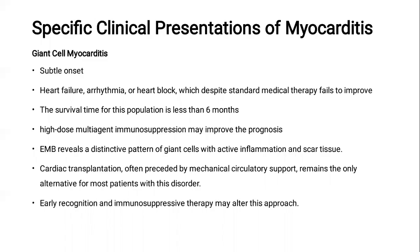Giant cell myocarditis has a subtle onset, usually presenting with rapidly progressive heart failure and arrhythmia — ventricular tachycardia or high AV block. For these patients, the survival is very poor, with the survival of this population less than six months. How to treat this patient? Early use of high-dose multi-agent immunosuppression may improve the prognosis. Place the patient on mechanical circulatory assist device; if it fails, go for cardiac transplantation.